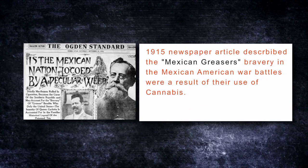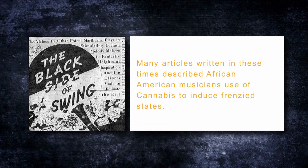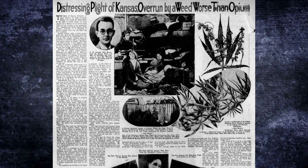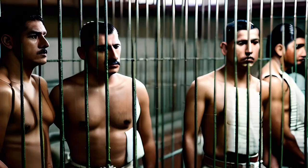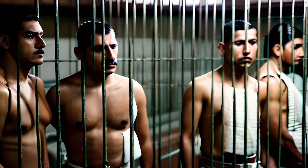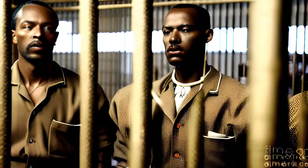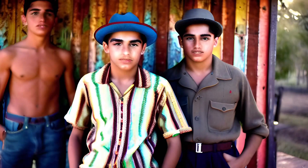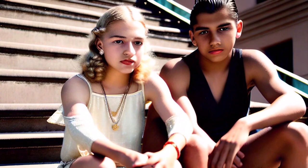In the early 1920s, states began to criminalize the possession of cannabis. And by the 1930s, the federal government had passed the Marijuana Tax Act, making cannabis illegal at the federal level. The law was mostly driven by negative attitudes towards Mexican immigrants and African Americans, who were falsely accused of using cannabis to commit violent crimes and corrupting white youth.